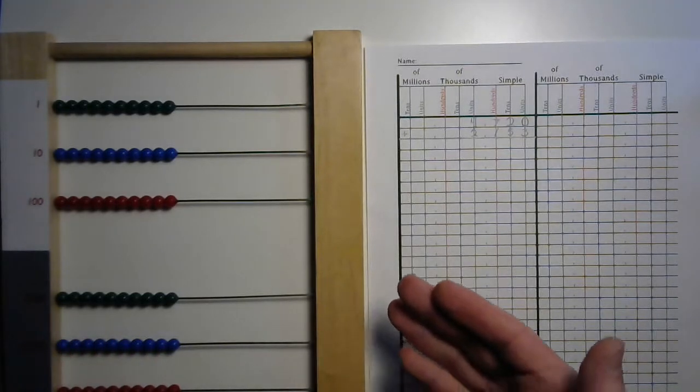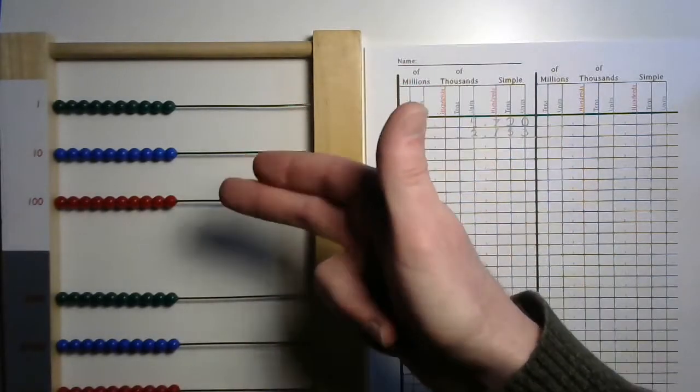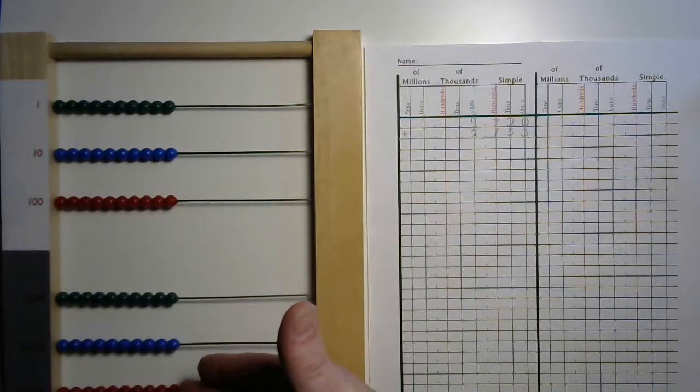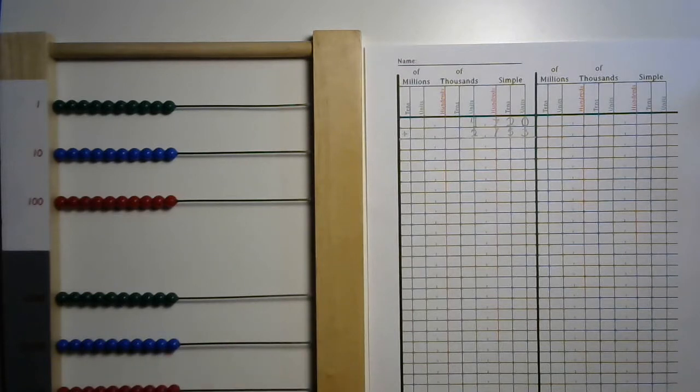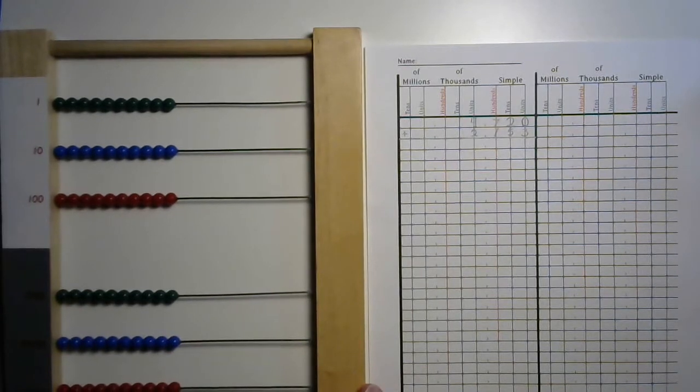Let's just remember our categories: our units, tens, hundreds, thousands, ten thousands, hundred thousands, and then down here is the millions, which you can't see right at the moment.